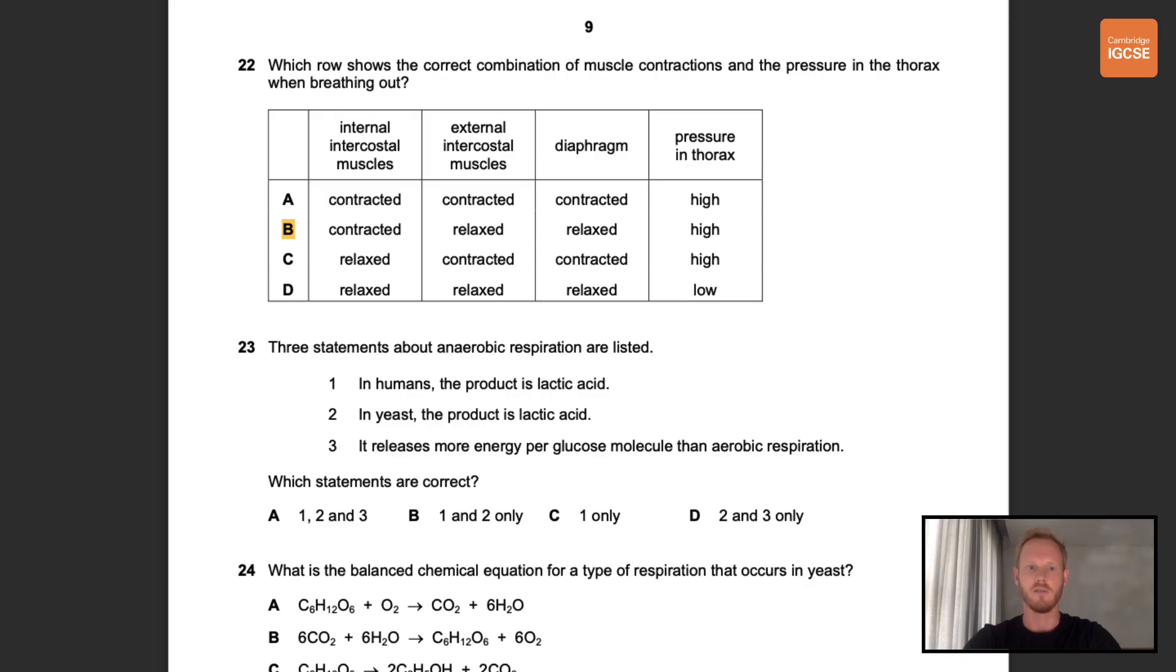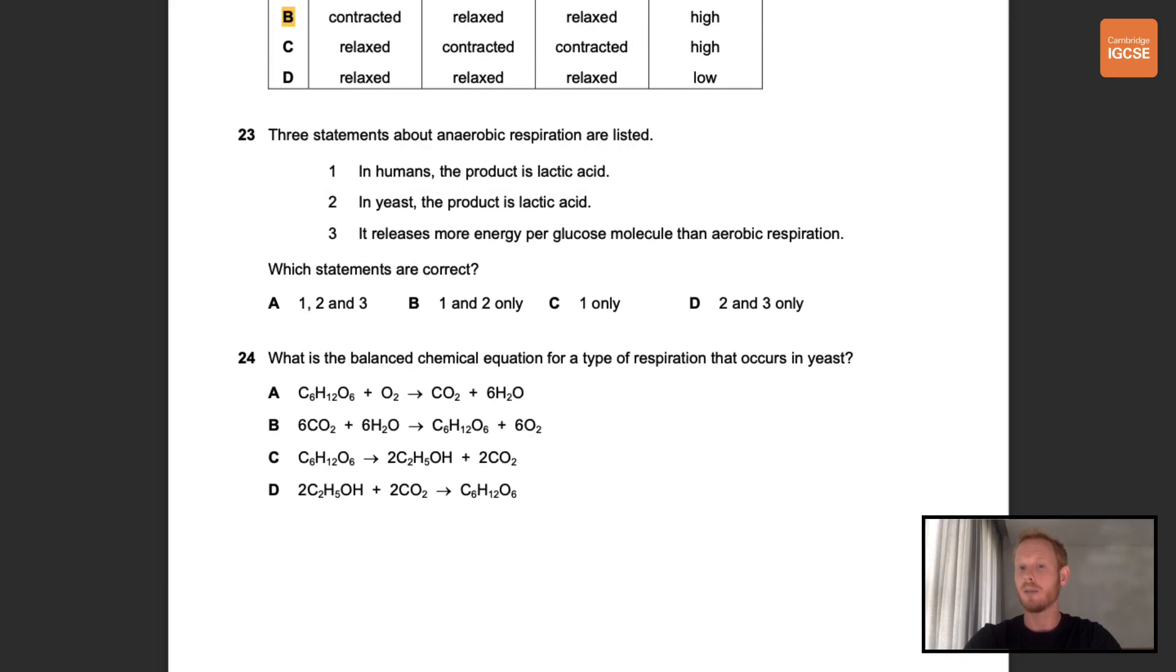Number 23. Three statements about anaerobic respiration are listed. Which statements are correct? So the first statement is that in humans the product is lactic acid. This is correct. Number 2, in yeast the product is lactic acid. This is wrong as yeast produce ethanol and carbon dioxide. And number 3, it releases more energy per glucose molecule than aerobic respiration. This is also wrong. In fact, it's the other way around. Aerobic respiration releases much more energy. The only correct statement here is number 1, so the answer we're looking for is C.